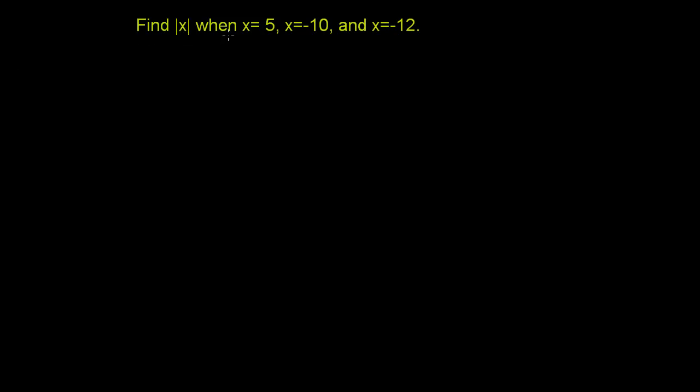Find the absolute value of x when x is equal to 5, x is equal to negative 10, and x is equal to negative 12. So the absolute value, the way of writing it is almost more complicated than what it really is. The absolute value is really just the distance of x from 0.